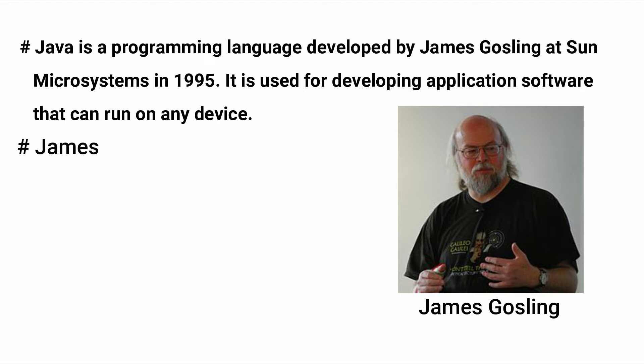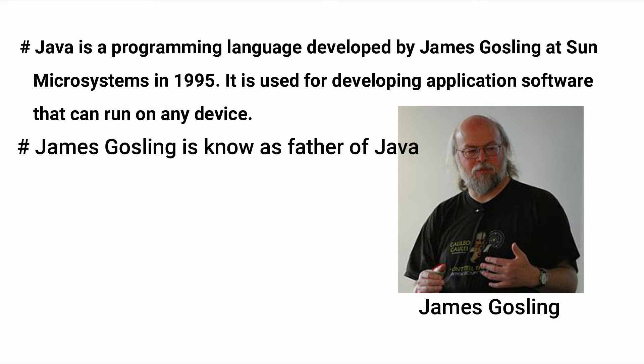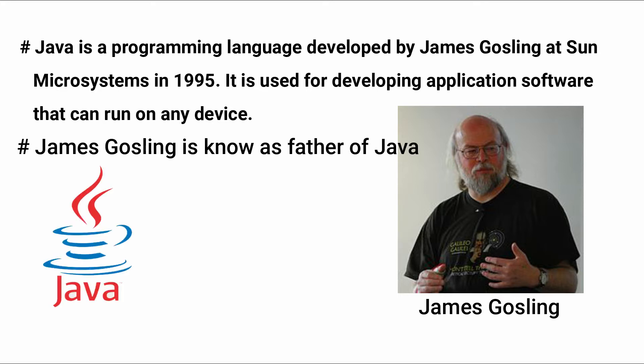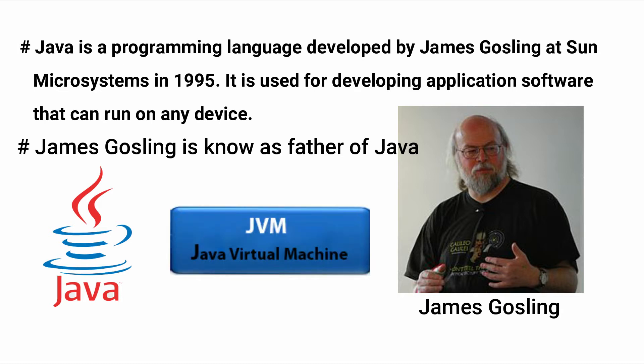James Gosling is known as the father of Java. Why is he called the father of Java? Because he created the original design of Java and implemented the language's original compiler and virtual machine. He is the first computer scientist credited with developing the Java programming language, and he invented the authentic layout of Java, as well as its compiler and virtual machine.